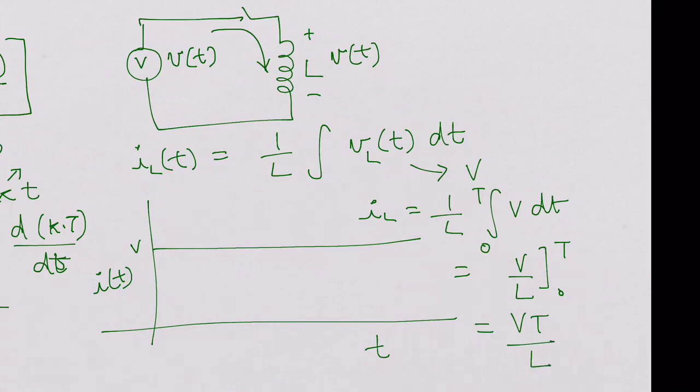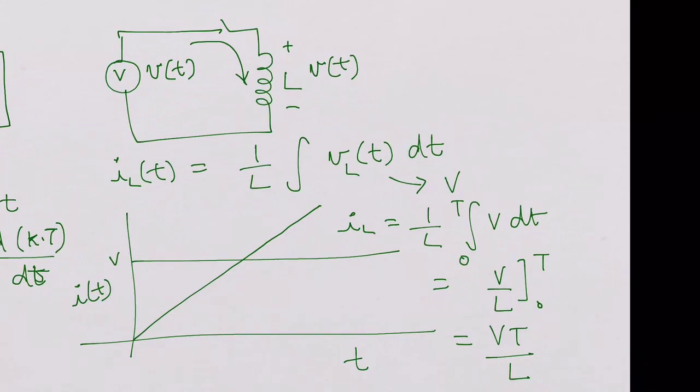So what it means is with respect to time, the current keeps increasing. But in reality, this does not happen because there is always a source resistance R for each of these voltage sources. So that would limit the current to once it increases to a certain level—it limits to V over R. That is the upper limit for the current.